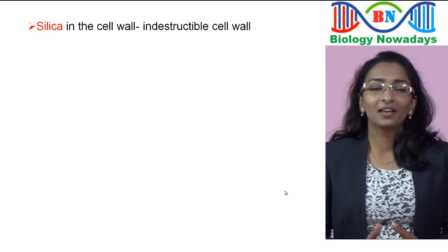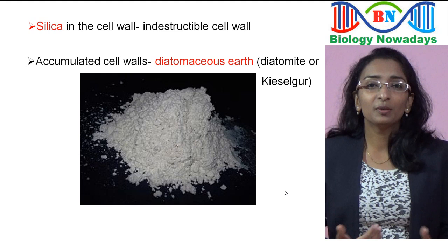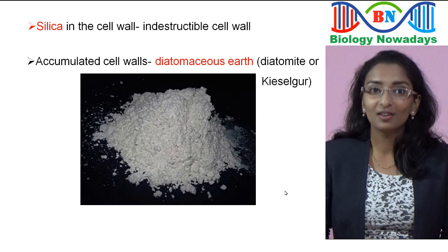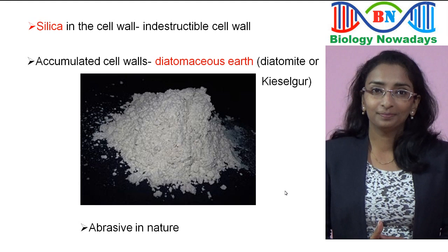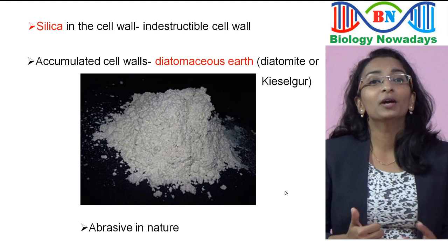When this organism dies, the only thing left behind is its cell wall. This accumulation over billions of years has led to large deposits of silica on ocean floors called diatomaceous earth, or diatomite, or kieselguhr. As it is abrasive in nature, it is used in polishing. It is also used in filtration of oils and syrups, because the diatom cell walls can pick up even the small impurities in these liquids.